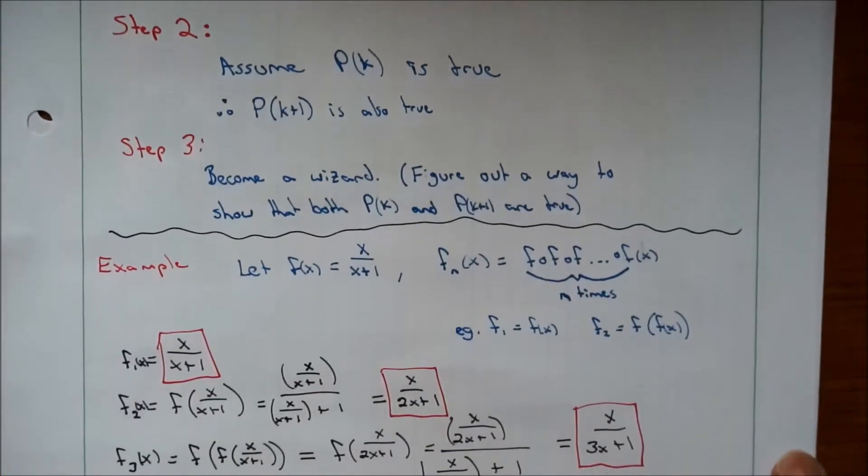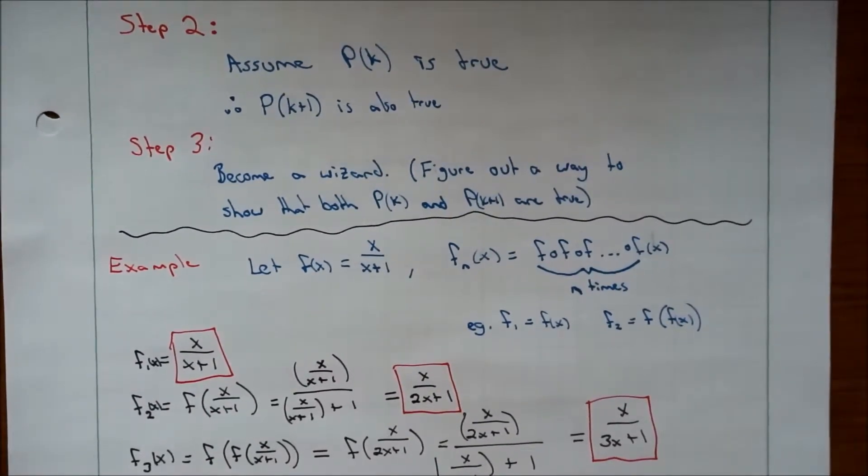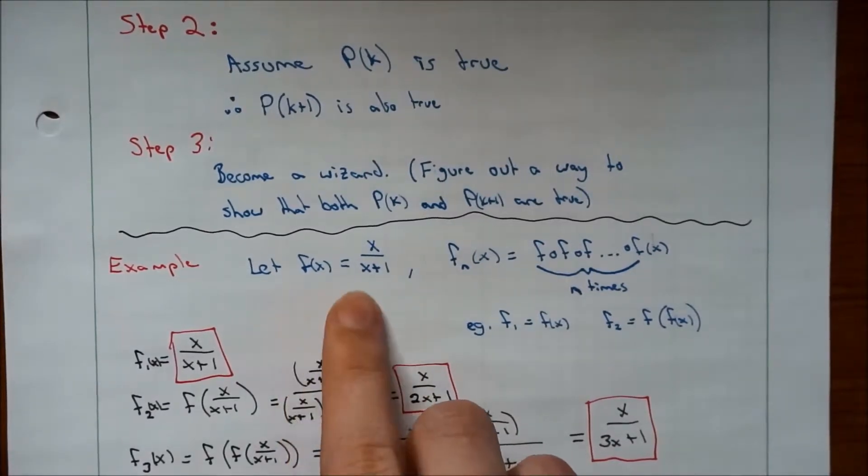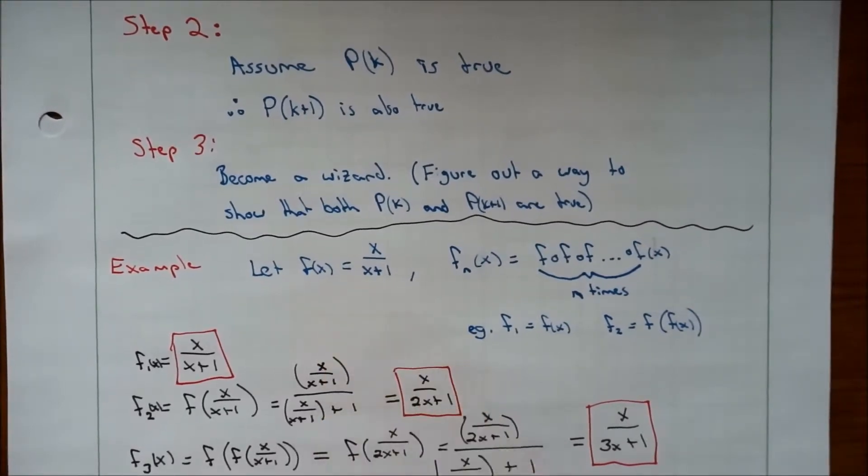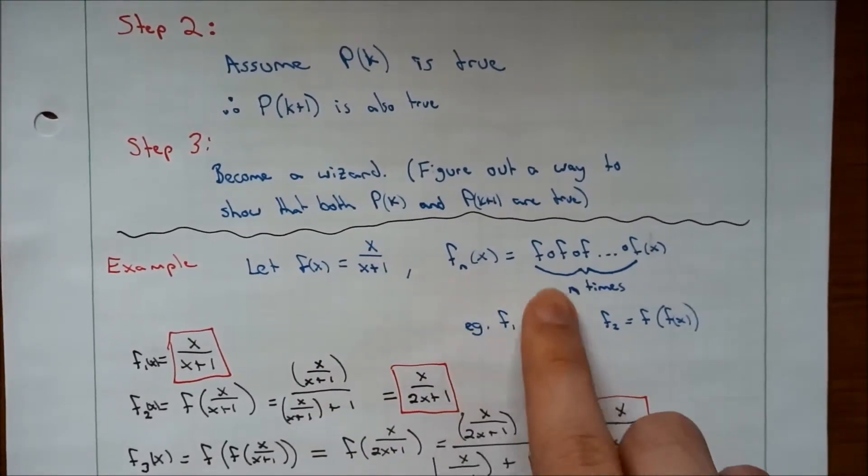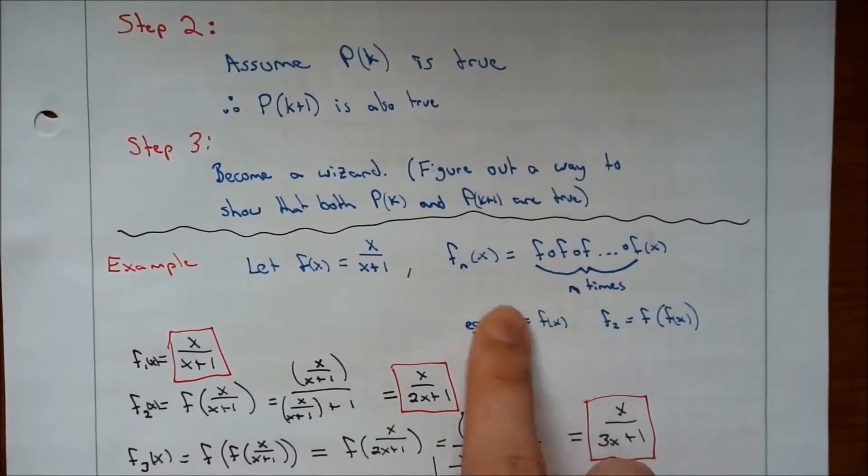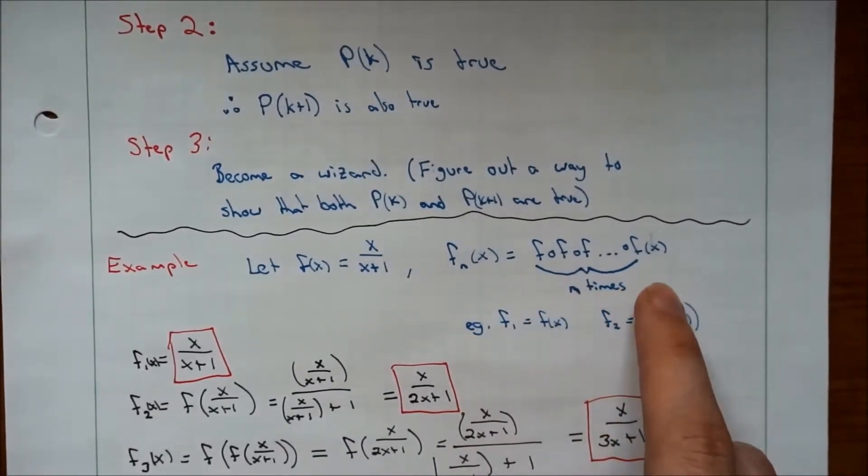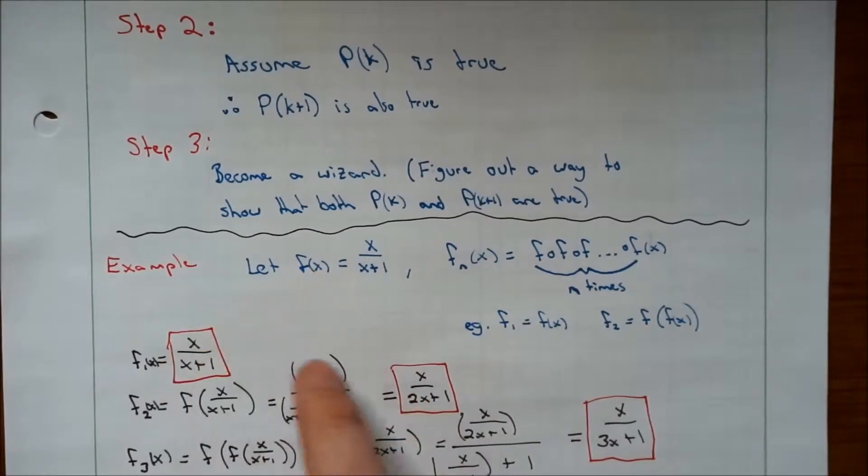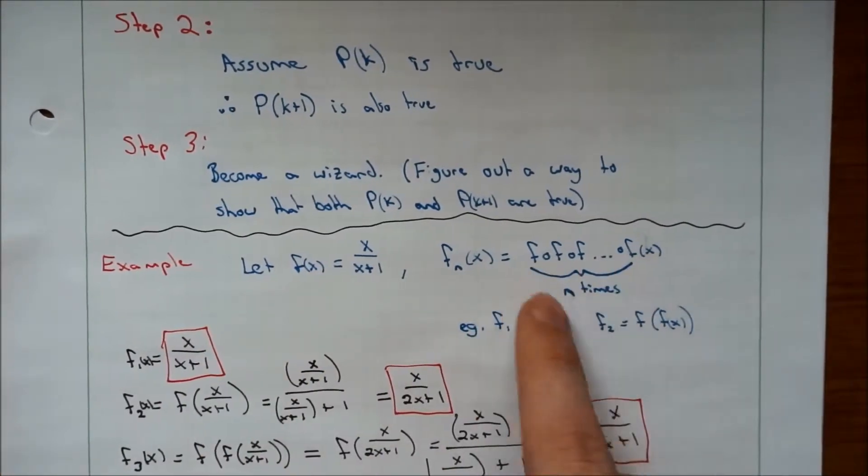So let's jump into the example I have for you. We're going to let f(x) equal x/(x+1). And we have f_n(x) equals f of f of f of x n times. If you haven't seen this before, basically what we're doing is just taking f(x) and plugging it into itself recursively n times.